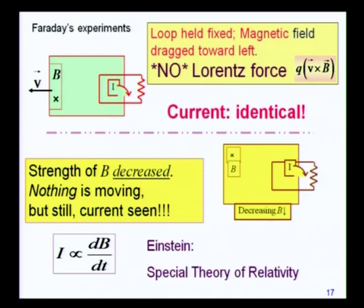This is an incredible result, and more than anything else — perhaps more than the Michelson-Morley experiment — it seems that it is this electromagnetic experiment which prompted Einstein to come up with the theory of relativity, and to reinterpret notions of space, time, and the finiteness of the speed of light, and everything else that would follow.